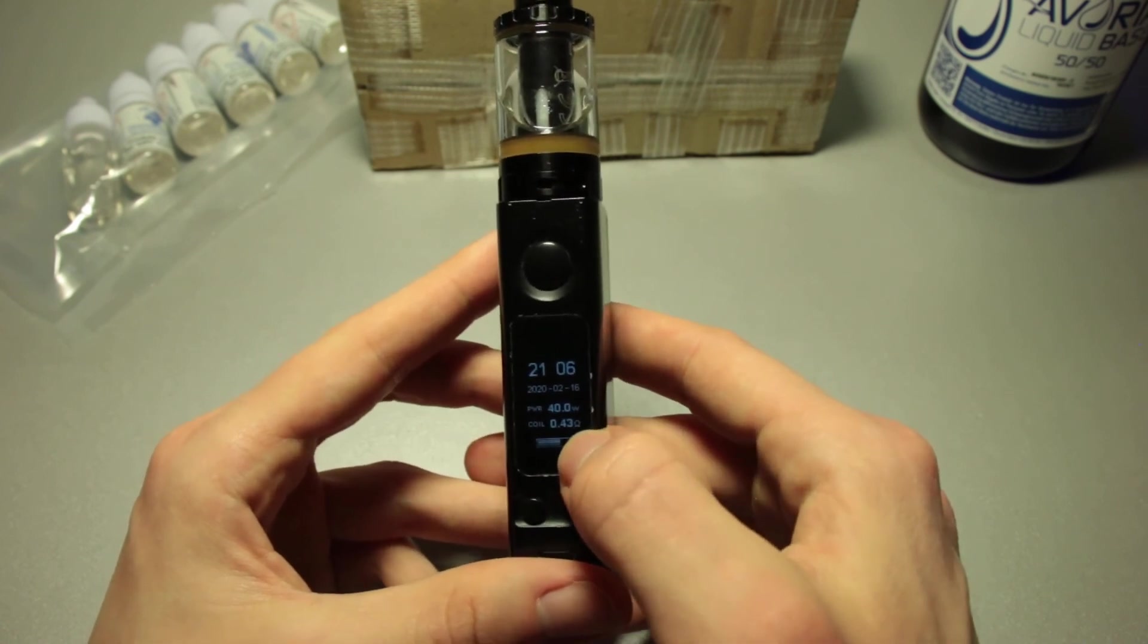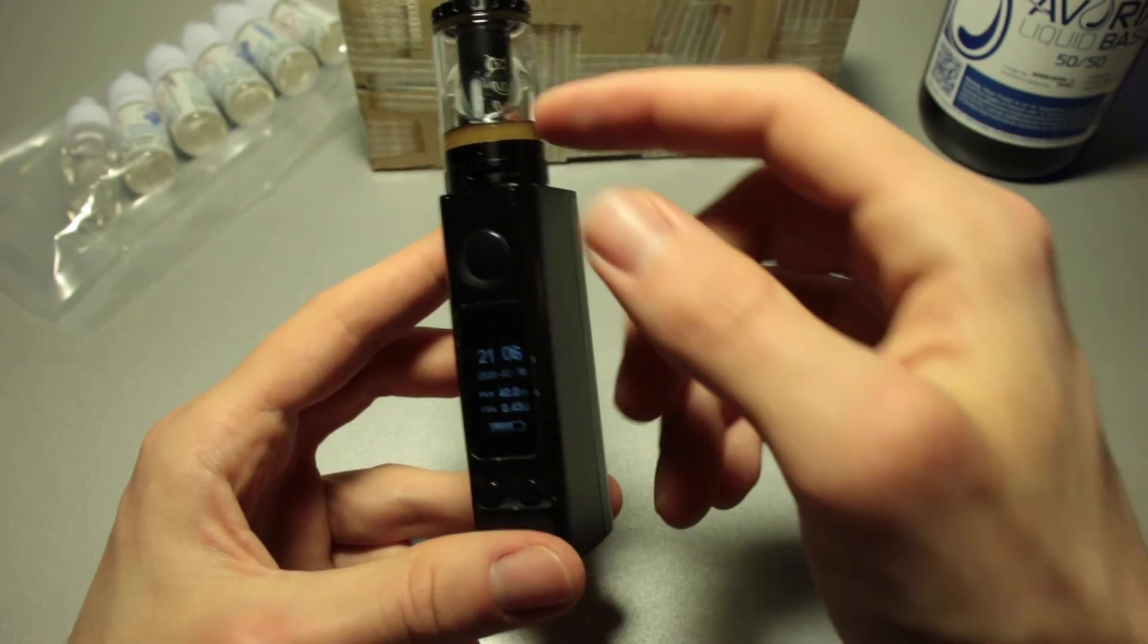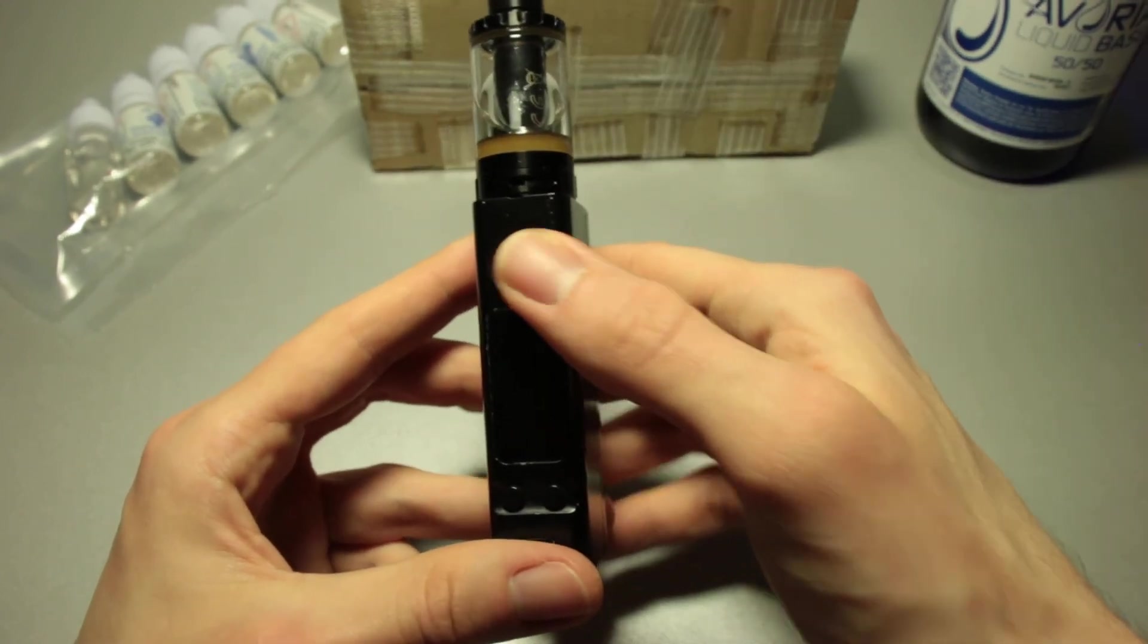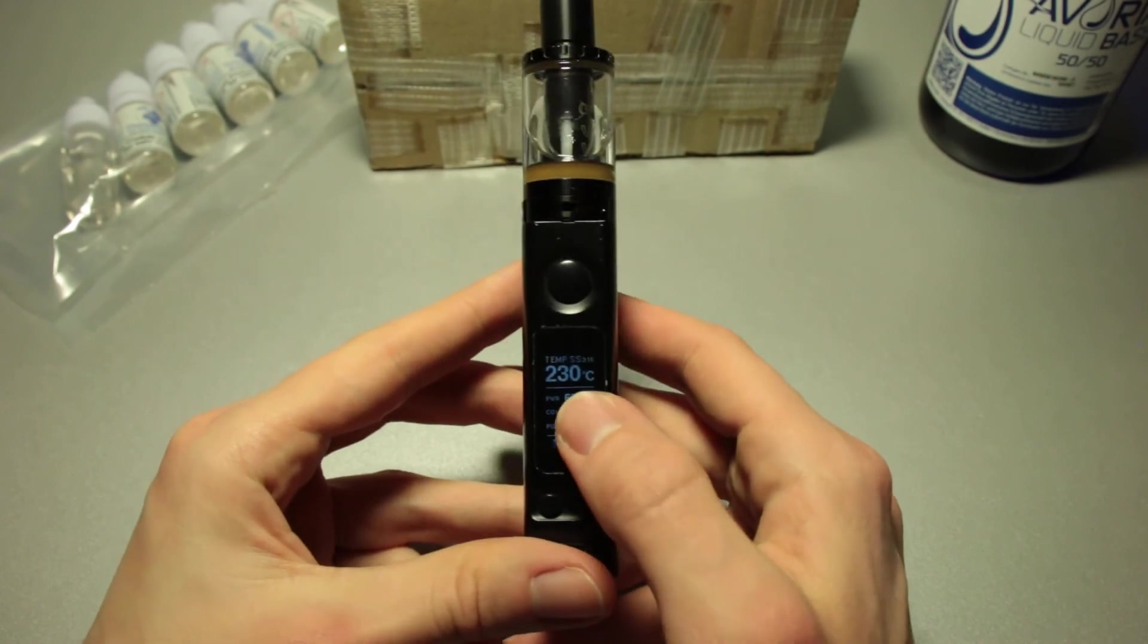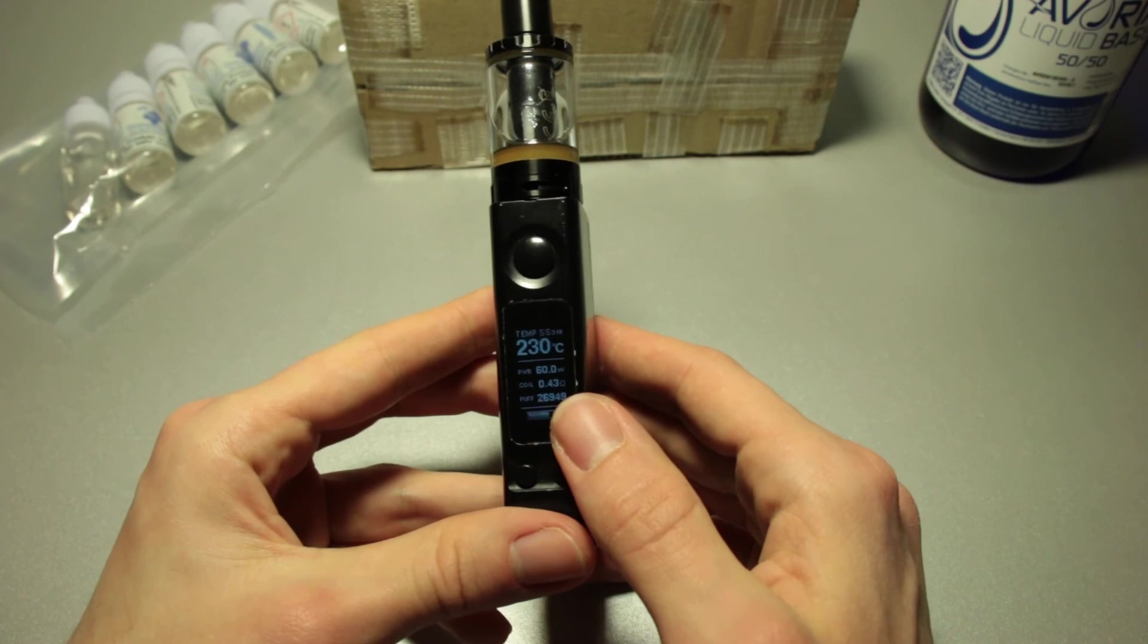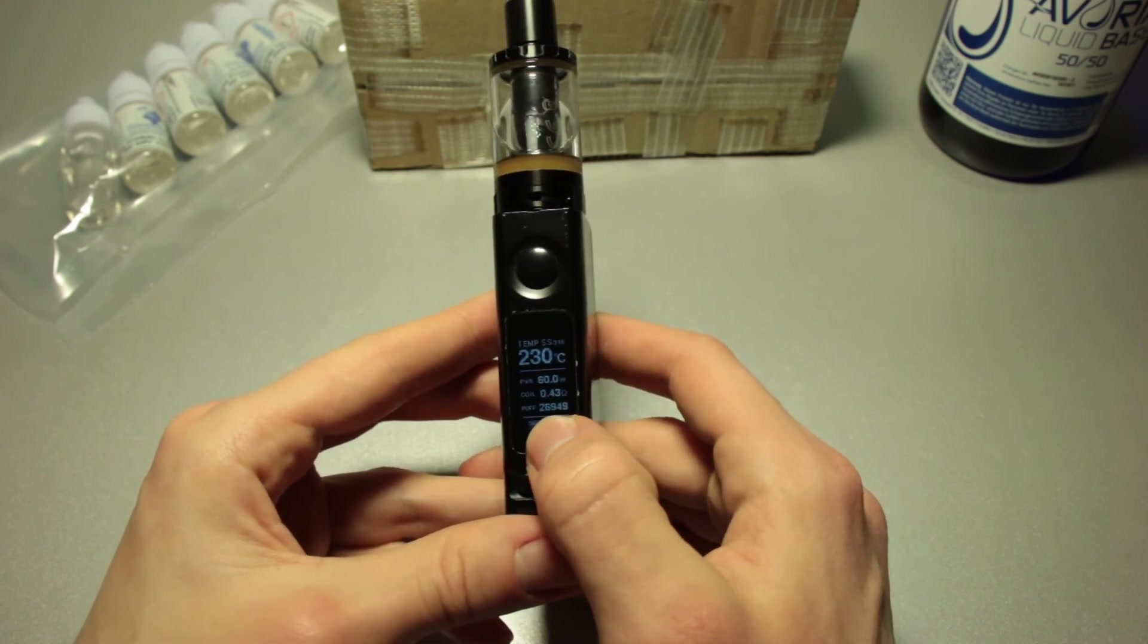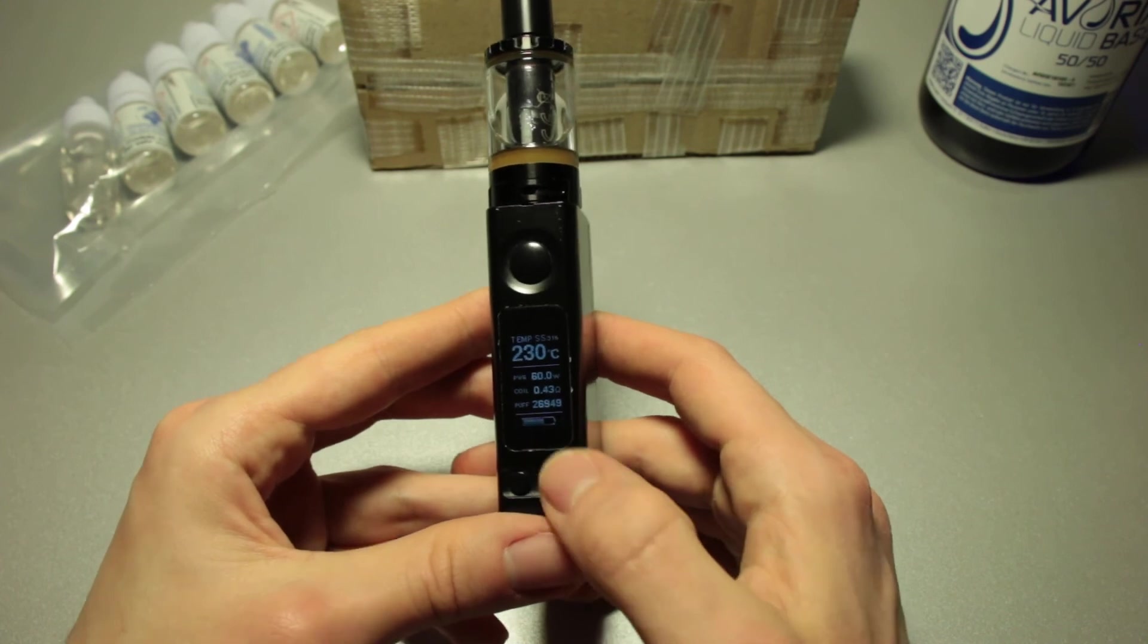I've got this set to time, 40 watts, 0.43 ohms. It's not really... well it's... doesn't matter. You can cycle through. This is the temperature mode. I always have it at like 210 to 230 degrees centigrade, degrees Celsius, at 60 watts. Oh there we go. About 27,000 puffs already.